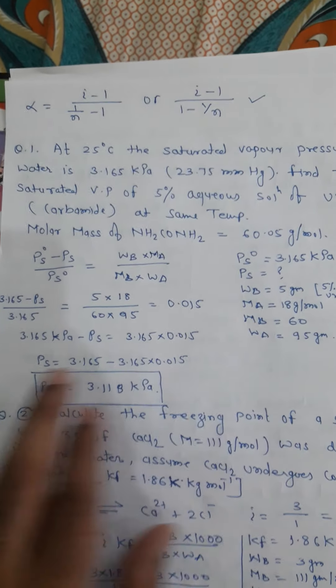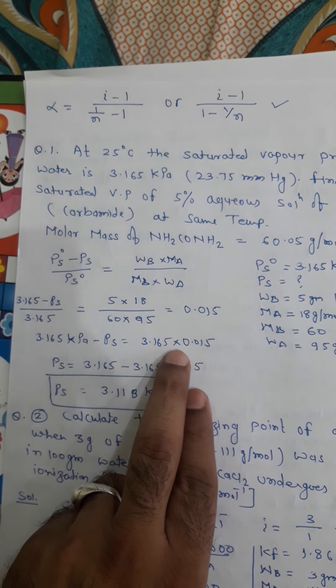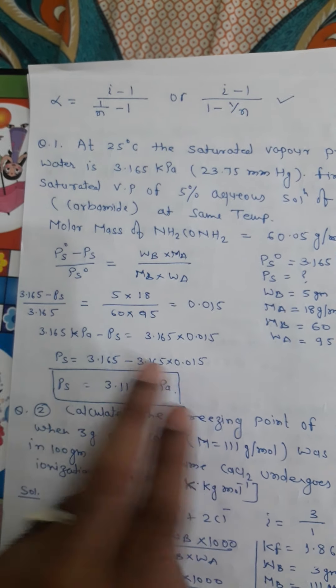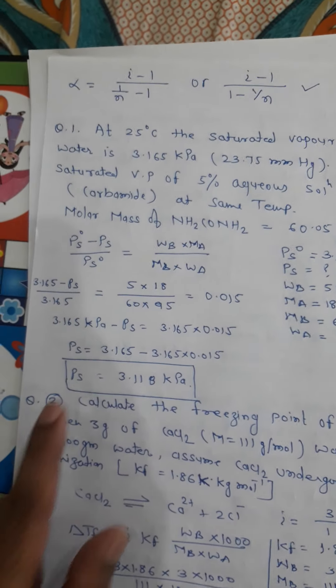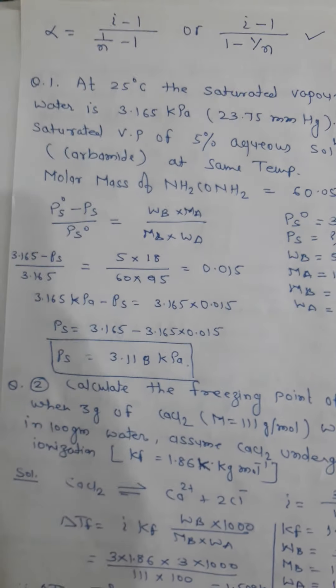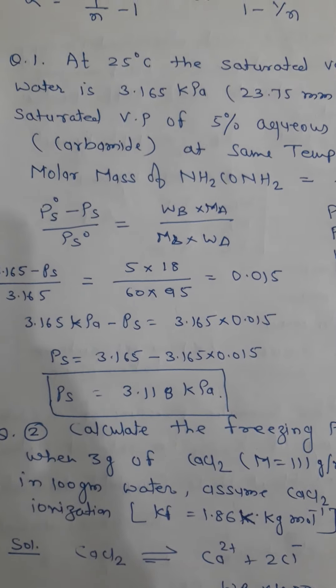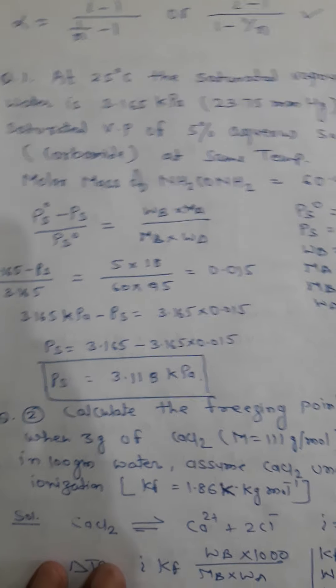By cross multiplication, 3.165 kilopascal minus PS is equal to 3.165 into 0.015. By transposing, PS is equal to 3.165 kilopascal minus 3.165 into 0.015 and our net answer will be 3.118 kilopascal. Very simple.